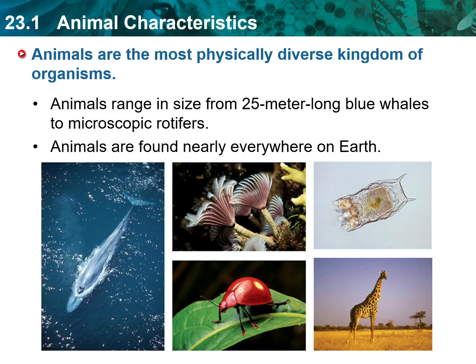Animals are remarkably diverse in terms of being a group of organisms. They range in size from blue whales, which are twice the length of a school bus, to rotifers, smaller than the period at the end of a sentence. As shown on the screen, some look like soft tubes, and others have muscular bodies inside hard shells, or soft tissues over hard internal skeletons. Some animals have many specialized tissues and organs, and others have no distinct tissues at all.